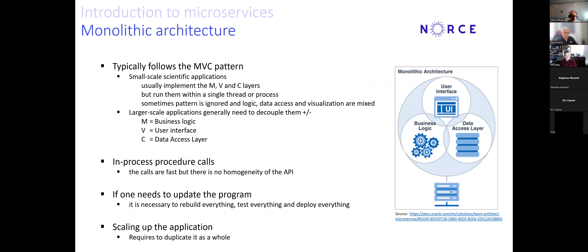When we talk about microservice architecture, we first talk about what came before — monolithic architecture. On the sketch on the right, you can see how monolithic architecture is structured. It follows the MVC pattern in the sense that you have a user interface as the view, the business logic as the model, and the data access layer as the controller — handling data and sending it to the user interface for visualization or post-processing.